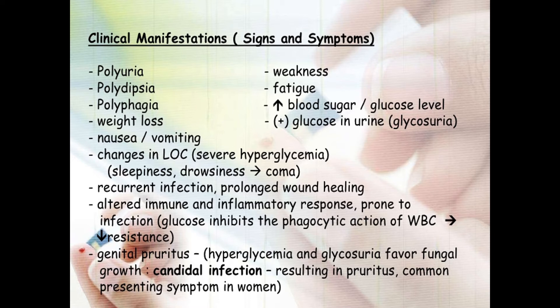Other symptoms include weight loss due to wasting of proteins and use of fat as energy, nausea, vomiting, weakness, fatigue, increased blood glucose level, and glycosuria — presence of glucose in urine, which is normally absent. Rare signs and symptoms include genital pruritus, particularly vaginal itching common in females — usually due to fungal infection — repeated infections especially UTIs, delayed wound healing, and altered immune and inflammatory responses, all due to hyperglycemia.